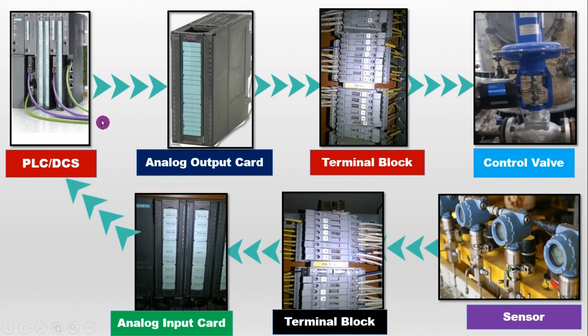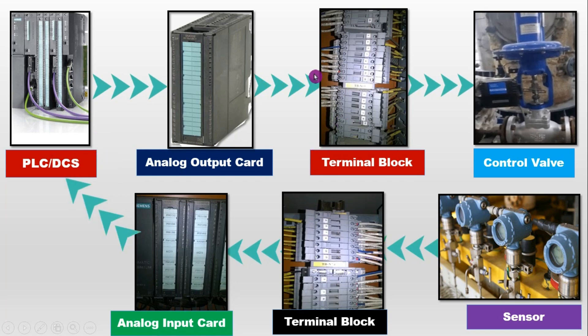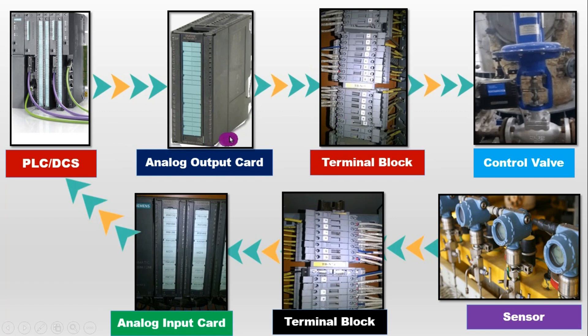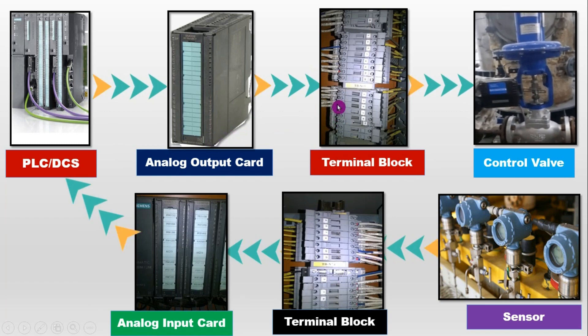The signal to operate a control valve is sent to the terminal block in PLC DCS panel via analog output card or analog output module. This signal is 4 to 20 mA signal and provided to positioner. Then positioner positions the control valve according to the signal.